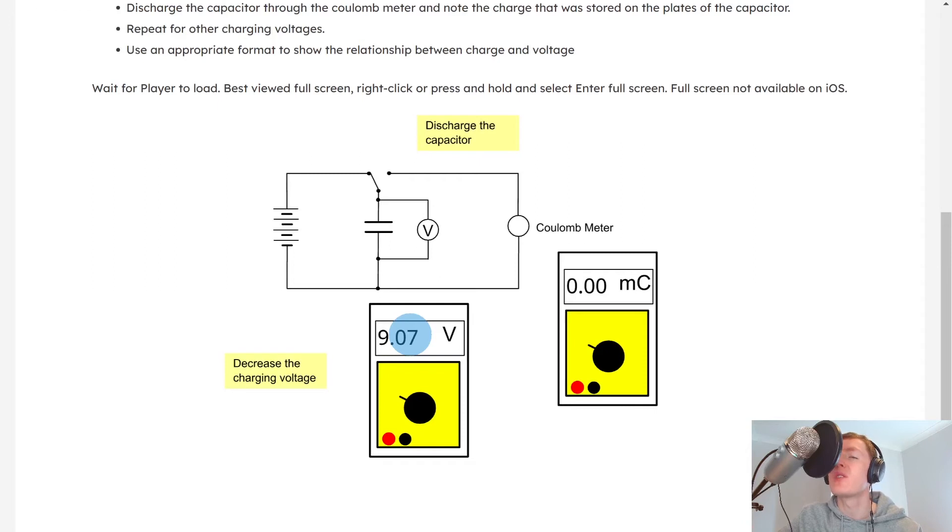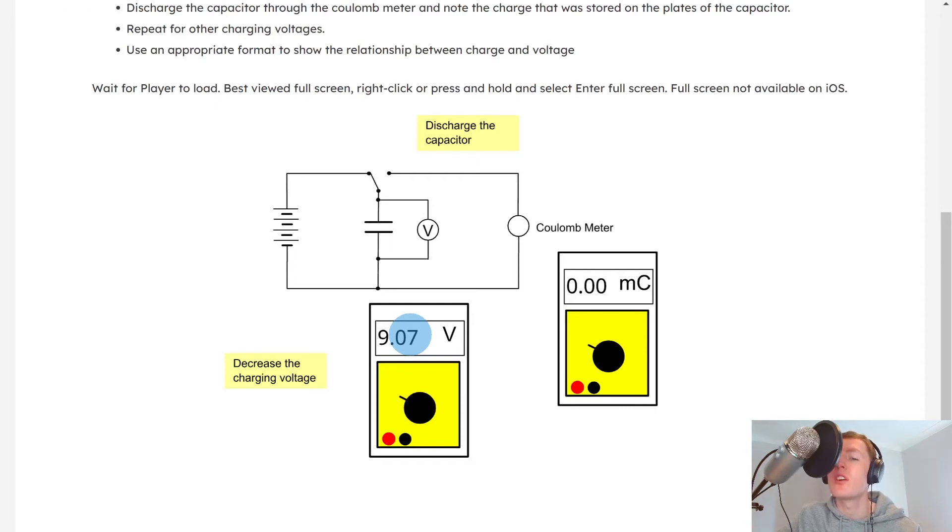Now because we obtained six values of potential difference and six values of charge, we would then have six data points on our graph. Going back to the notes now, if you were to plot a graph of charge on the y-axis against potential difference on the x-axis, this is what you would see. So you would see a graph with a straight line through the origin.